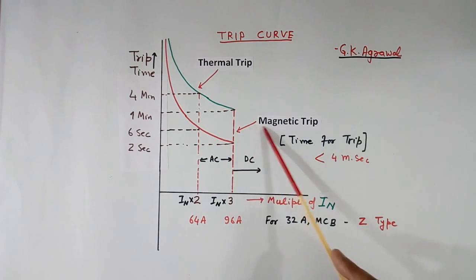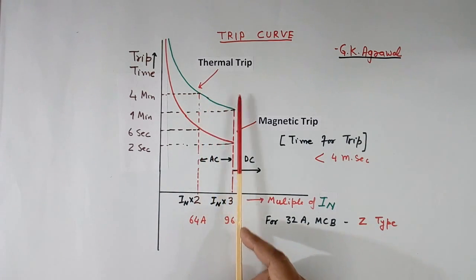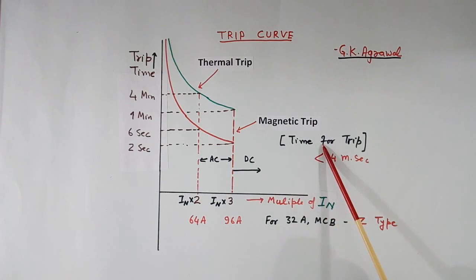This line is for magnetic trip. Whenever current exceeds more than this or more this, anything between 2 to 3 times, this line can be anywhere, the breaker will trip and the trip time will be very fast. It will be very low, 4 ms or less. This I have taken for a Z-type MCB of one typical MCB. What is Z-type? I will tell later.